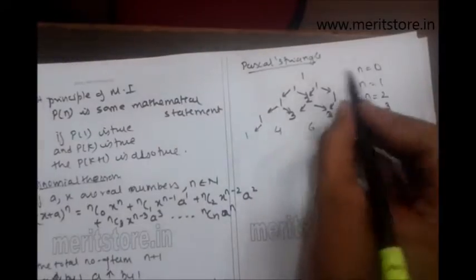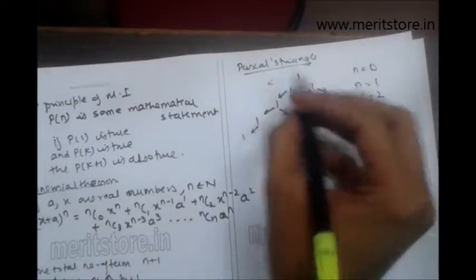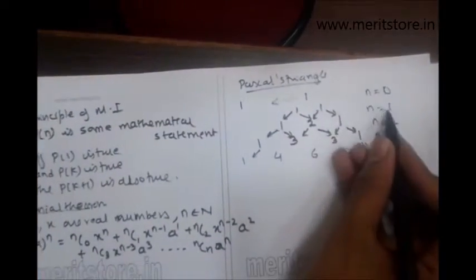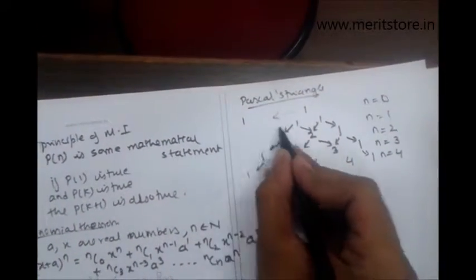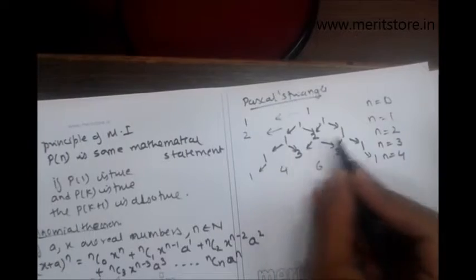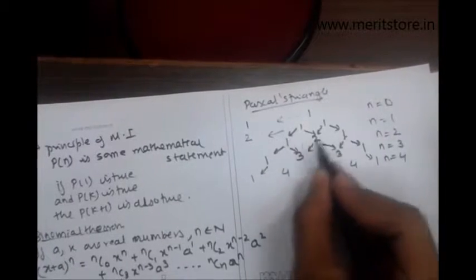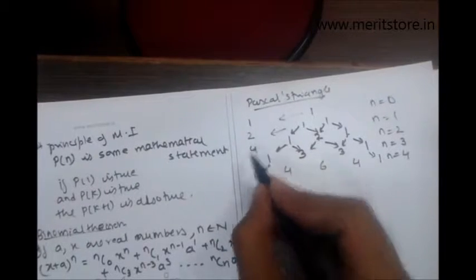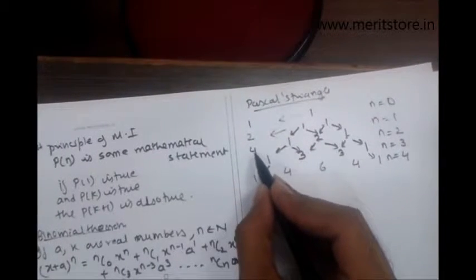If you observe here, the first term being the single term, the sum is 1. For n equals 1, 1 plus 1 gives you 2. For n equals 2, 1 plus 2 plus 1 equals 4. So the sums are basically powers of 2.